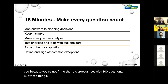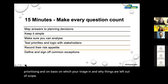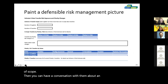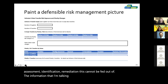These things feed into awareness. And when stakeholders understand why you're prioritizing, on the basis on which you're triaging, and why things are left out of scope, you can have a conversation with them about an overall view of where you are. This may be a front sheet for a status update, where you're demonstrating that you have this amount of transfers with this exposure at this stage in their assessment, identification, and remediation — all fed out of the information I'm talking about gathering.